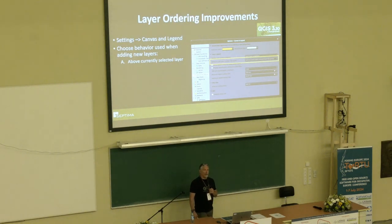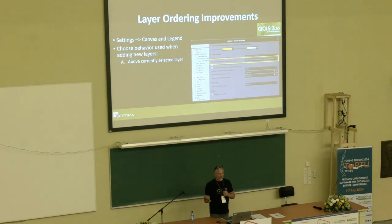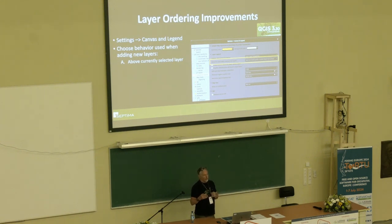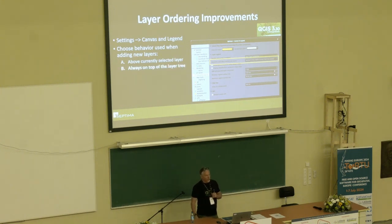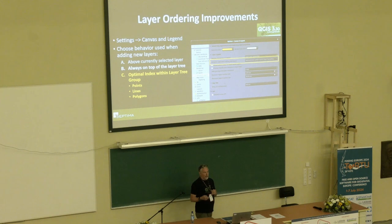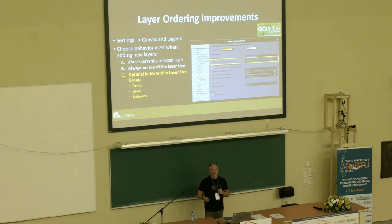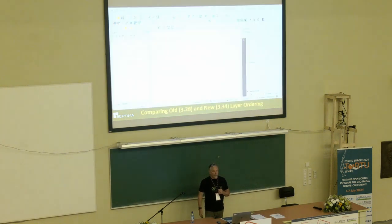There have also been layer ordering improvements, found under Settings > Canvas and Legend. Previously, when you added a new layer to QGIS, it would land in the layers panel above the currently selected layer, which wasn't always ideal. There's now an option to always put that new layer on top of the layer tree, and even nicer, an option for an optimal index within the layer tree group. This will order points on top of lines, on top of polygons.